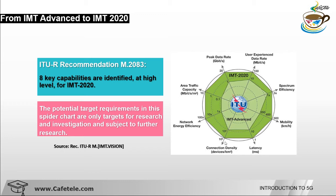Network energy efficiency was 1x in IMT Advanced but in 5G it leads to 100x. This improvement will reduce energy consumption. The last key capability is area traffic capacity, which depends not only on spectrum efficiency but also on bandwidth availability. Area traffic capacity equals spectrum efficiency multiplied by bandwidth and by transmission reception point density. It was 0.1 Mbps/m² before and is now 10 Mbps/m².